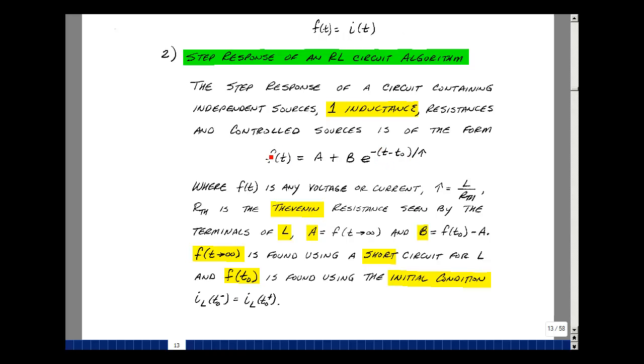F(t) can be any voltage or any current in your circuit. Tau is L over R_Thevenin. R_Thevenin is the resistance seen by the terminals of the inductance. This again would be with all the independent sources set equal to zero. As T approaches infinity, this term drops out and we just get the value of A. As T approaches infinity, we're going to treat the inductance like a short circuit. So we're going to analyze our circuit and figure out the value of F(t) when we replace the inductance by a short circuit.